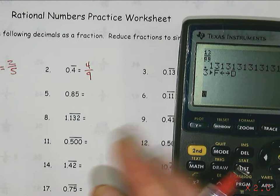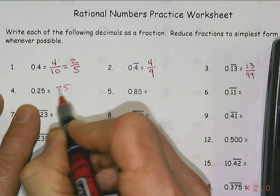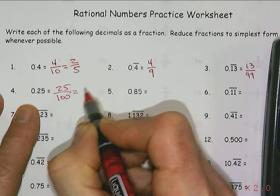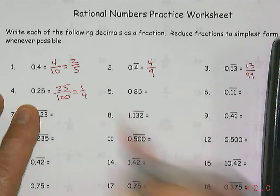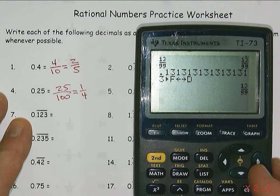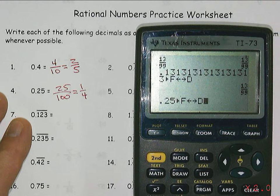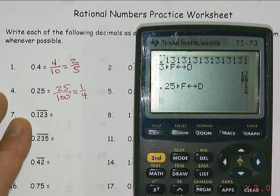So if I had 0.25, and I know that's 25 one-hundredths, and I know that reduces to one-fourth, but if for some reason I wasn't sure, I could always put in 0.25 fraction to decimal, and it'll give me the one-fourth there, the simplified version of it.